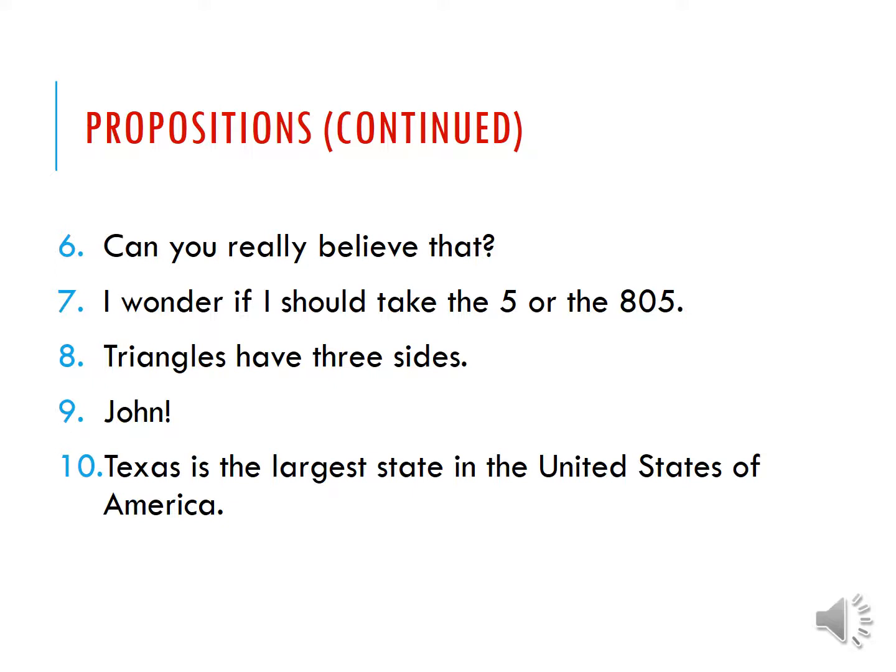'Triangles have three sides' — this is a proposition because it's true, and anything true or false is a proposition. 'John!' — screaming someone's name cannot be true or false, so it's not a proposition. 'Texas is the largest state in the United States of America' — this is a proposition even though it's obviously false; Alaska is the largest state. Remember: if it's true, or if it's false, or if it could be true or false, it is a proposition. Those pieces need to have truth or falsity so we can evaluate whether the argument is good or bad.